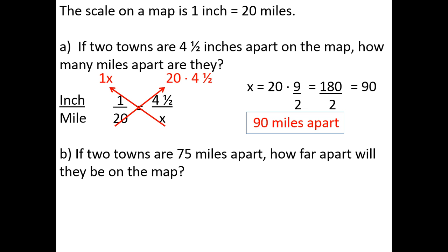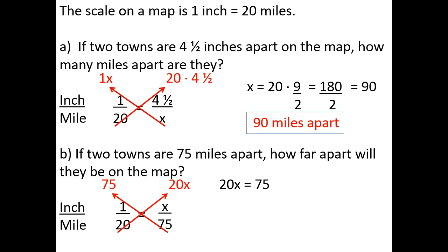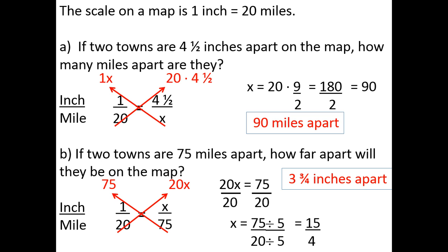If we know that two towns are 75 miles apart, how far apart will they be on the map? We use the same ratio: 1 inch equals 20 miles. We know the towns are 75 miles apart but don't know the inches, so x inches compares to 75 miles. Cross-multiplying gives 20x equals 75, so x equals 75 twentieths, which is 3 and 3 fourths. The two towns will be 3 and 3 fourths inches apart on the map.